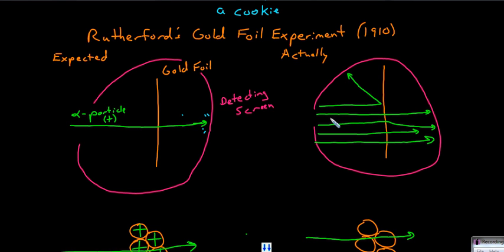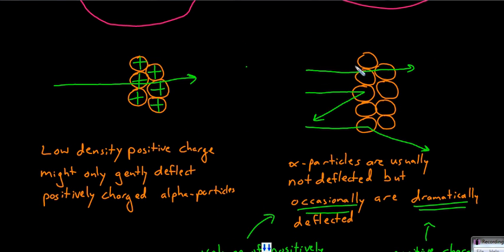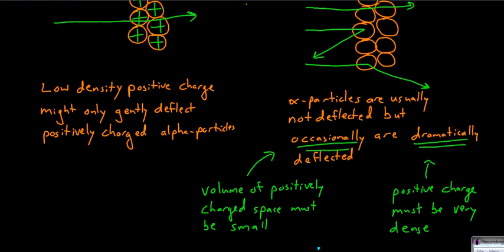Instead, though almost all alpha particles traveled through the gold foil and were seen at the detecting screen, occasionally there would be a moderate deflection or even sometimes a very extreme deflection. They would be dramatically bounced back, which was very surprising to Rutherford. He said it was like shooting a cannonball at tissue paper and having the cannonball bounce back at you. How is it that this dramatic deflection of these alpha particles could occur? Most particles make it through the atoms, but occasionally they would bounce dramatically back — very occasionally there would be that very dramatic deflection.